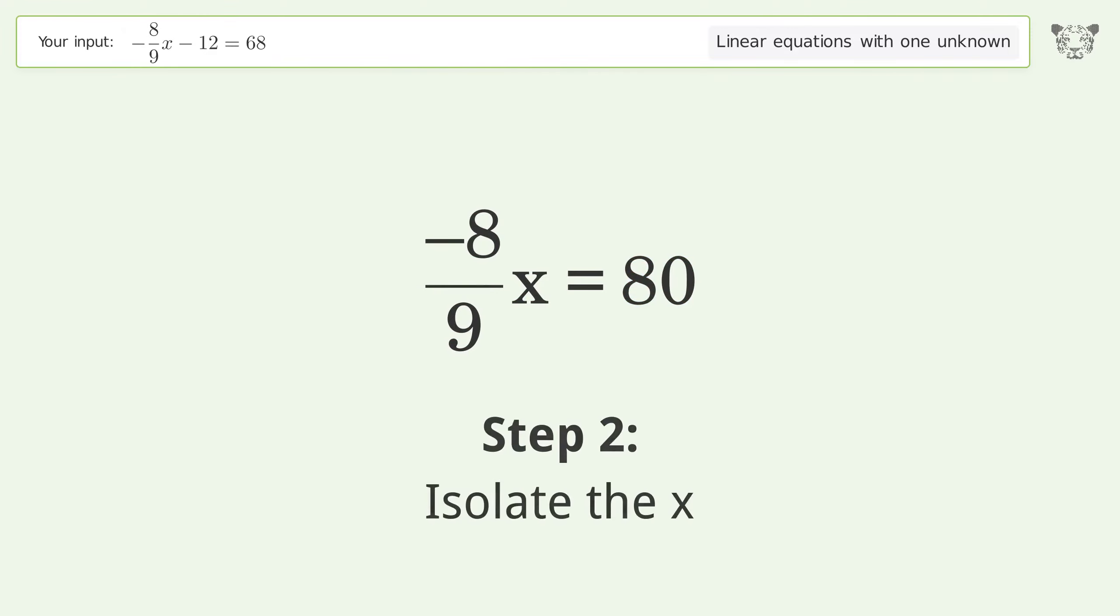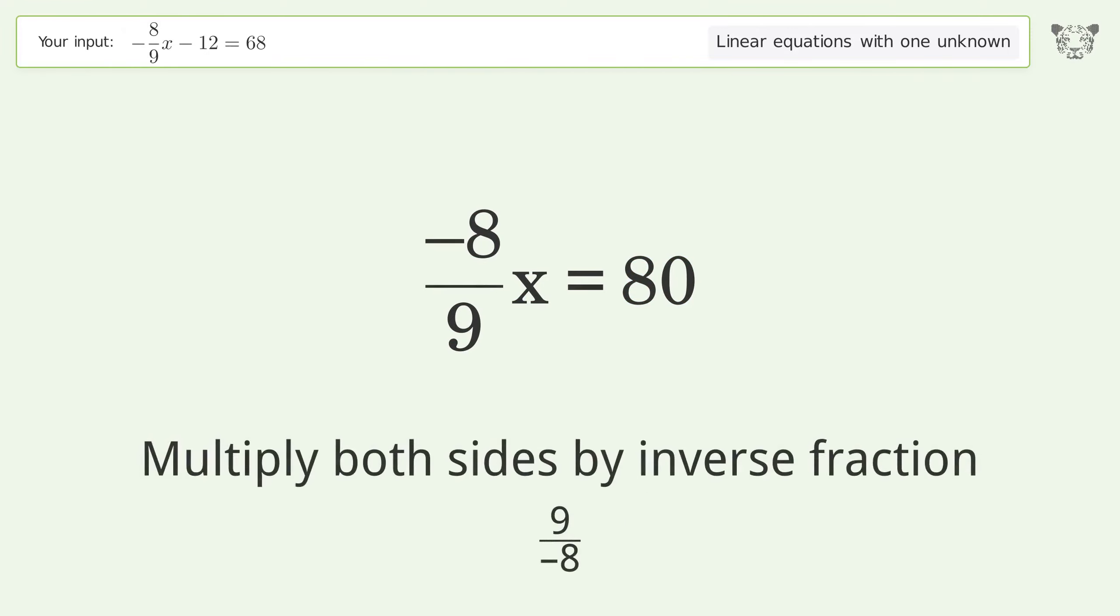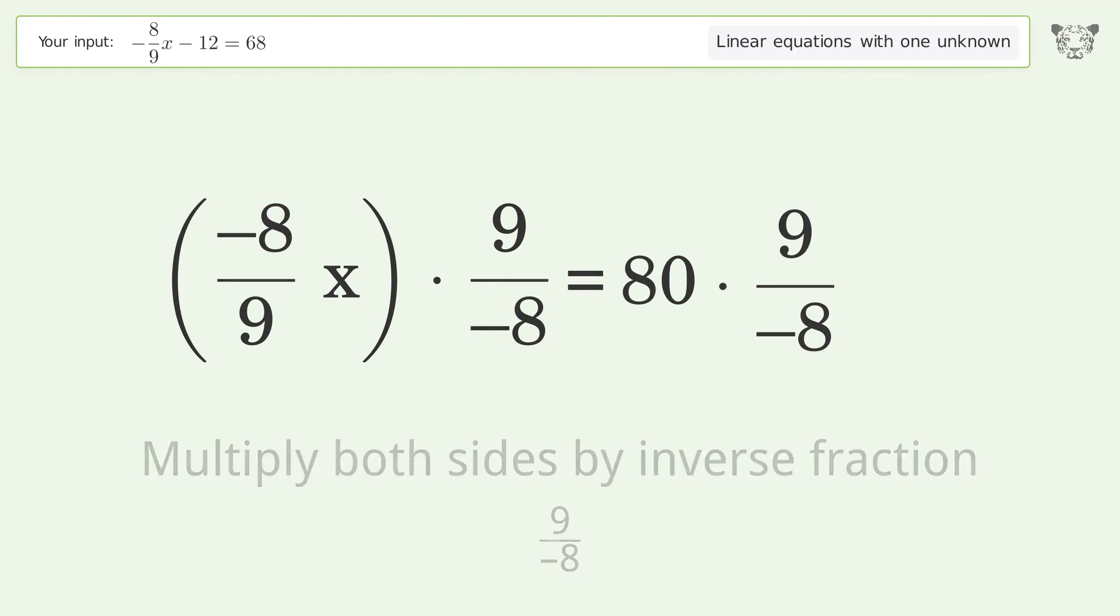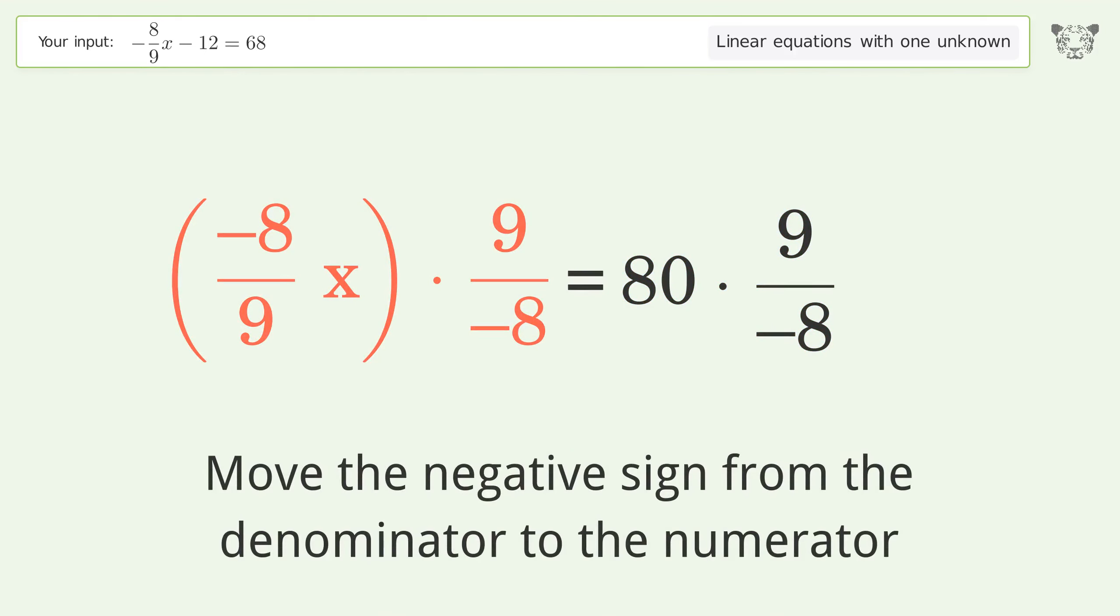Isolate the x. Multiply both sides by the inverse fraction 9 over negative 8. Move the negative sign from the denominator to the numerator.